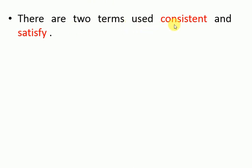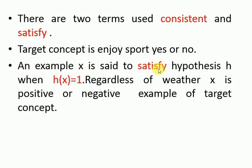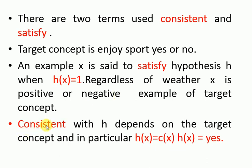There are two key terms used here: consistent and satisfied. The target concept is 'enjoy sport' — yes or no. An example X is said to satisfy hypothesis H when H(X) equals 1, regardless of whether X is positive or negative. Consistent means H(X) equals C(X), meaning it satisfies the target concept.